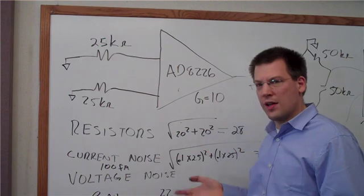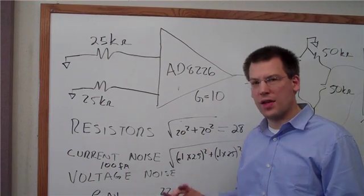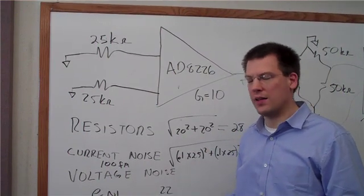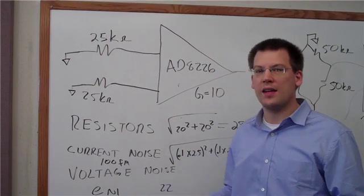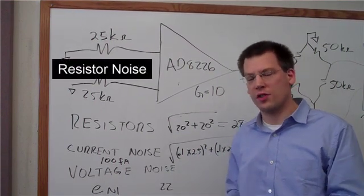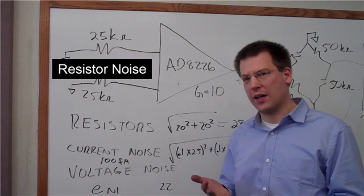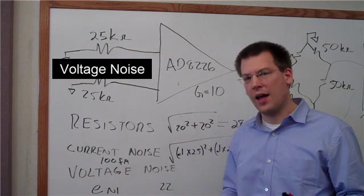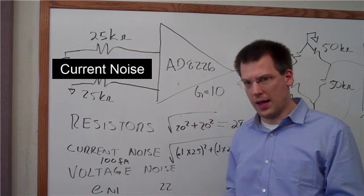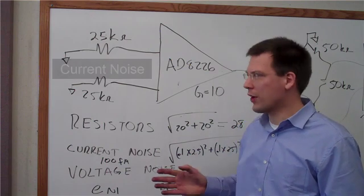When you do a noise analysis for an instrumentation amplifier, there are three things that you need to calculate. This is not just for an instrumentation amplifier, but for any type of amplifier. You need to calculate the resistor noise, the voltage noise of the amplifier, and the current noise of the amplifier.